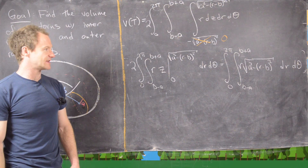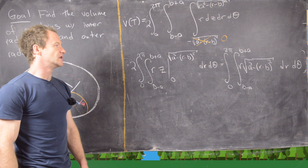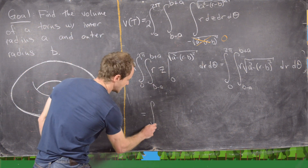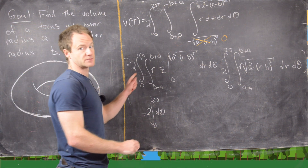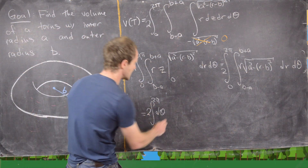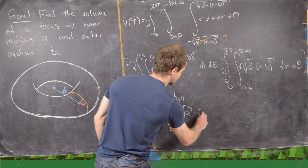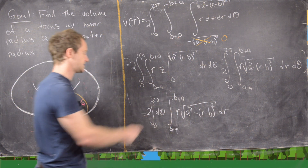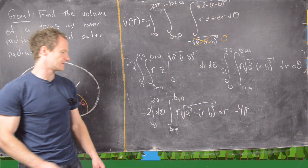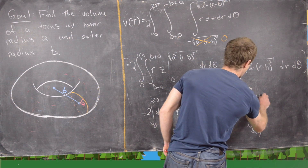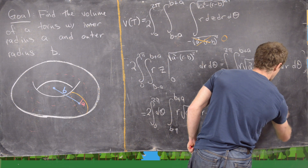Now notice we have a function of r times a function of theta — in this case the theta function is just 1 — so we can separate this into two single-variable integrals. The theta integral from 0 to 2pi gives 2pi, so combined with the factor of 2 we get four pi times the integral from B minus A to B plus A of r times the square root of A squared minus (r minus B) squared dr.